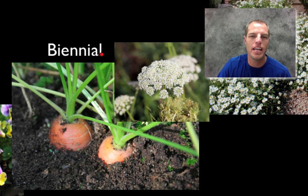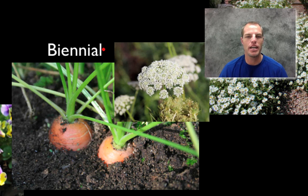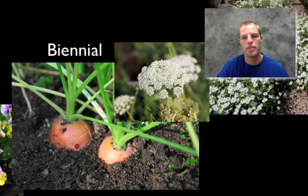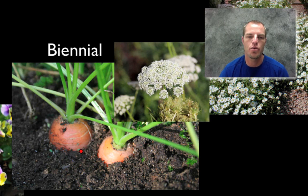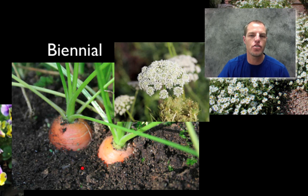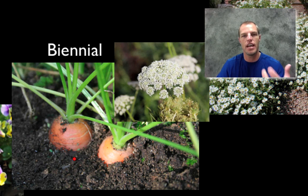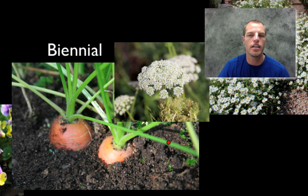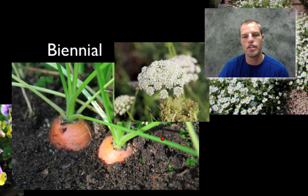Next are biennials — bi meaning two, so a two-year life cycle. The example is a carrot. When you eat a carrot, you're eating the root — specifically a taproot, which is very thick. In a biennial's first year, it doesn't flower at all; it puts all its energy into building up that root. That's why carrot plants have such thick roots. In the second year, they flower, reproduce, and then die off. So they have a two-year life cycle as opposed to one.